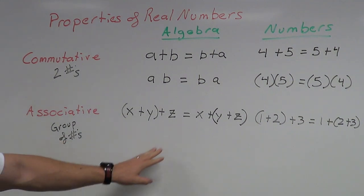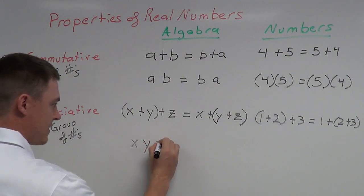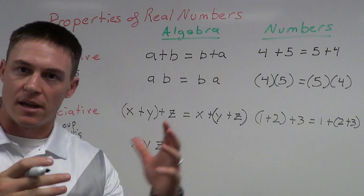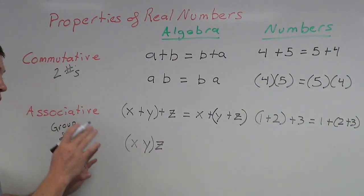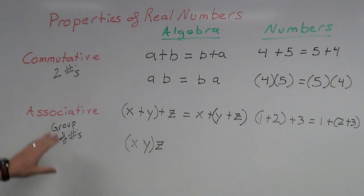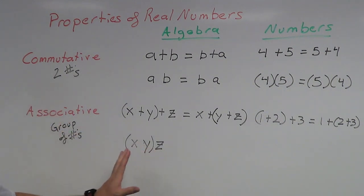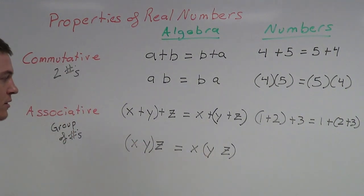Now the associative property of multiplication using the same variables. I take X times Y times Z. With PEMDAS, if I'm only multiplying I go left to right: take X times Y first, then multiply by Z: (XY)Z. The associative property of multiplication tells me it doesn't matter what order I multiply — I can multiply the last two together first: X(YZ). It doesn't matter what order I multiply my groups of numbers in, as long as the only operation is multiplication.